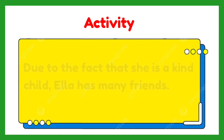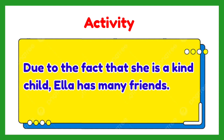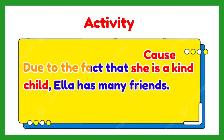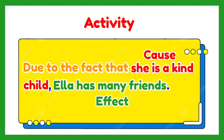Another one: 'Due to the fact that she is a kind child, Ella has many friends.' The cause is: she is a kind child, introduced by the connector 'due to the fact that.' The result of her kindness, or the effect, is: she has many friends.